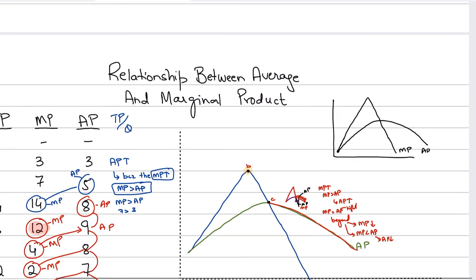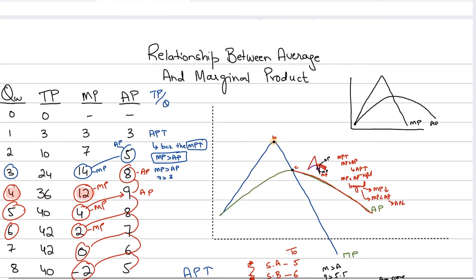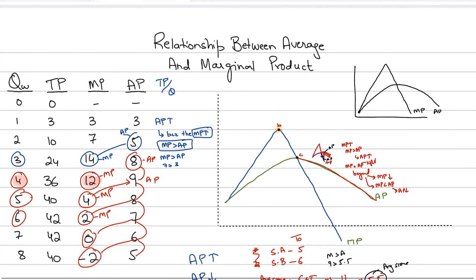That covers the production part of supply theory. We've covered diminishing returns, and what total product, marginal product, and average product are, including the graphs and calculations. In the next video we will be moving on to cost, specifically explicit and implicit costs. I hope you enjoyed the video — take care and subscribe to my channel.